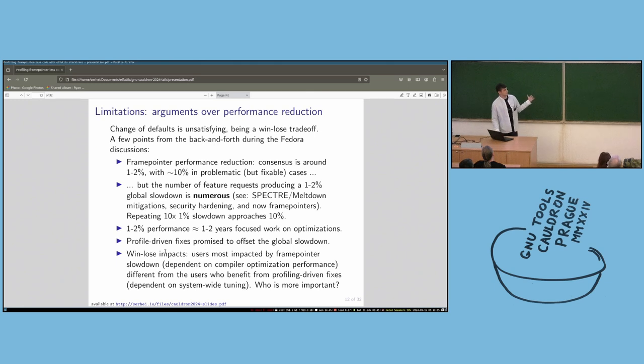But the discussions over this, I feel kind of glossed over a lot of the limitations and nuances of the issue because for the people pushing for this, there really wasn't much incentive to present the story as anything other than we will turn frame pointers back on and profiling will work, which isn't, is almost true, but there's a lot of details. So I've tried to summarize the basic arguments as they happened on the distribution mailing lists on this slide. Basically, it's rancorous because this is at bottom a win-lose trade-off. The performance reduction, the consensus, if you read discussions, is that there's a one or two percent performance loss. Like there's problematic cases where you might lose a lot more, but you can work on fixing those. The deeper problem is that there's actually a lot of feature requests where you get something potentially nice for a one to two percent global performance reduction.